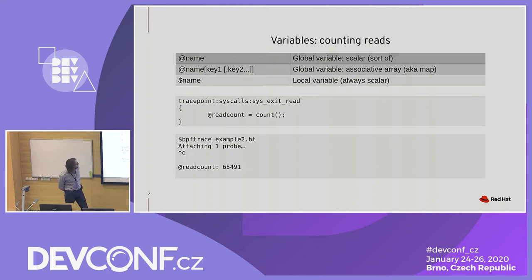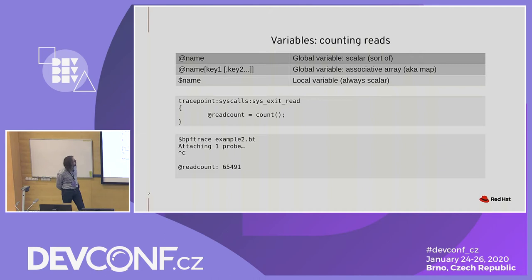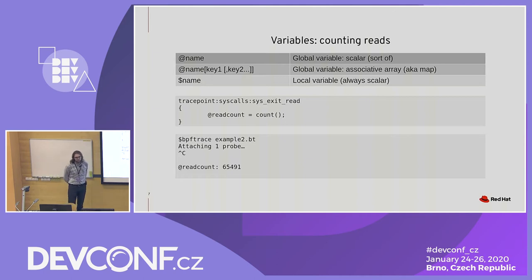Here's an example with just one variable, read_count. It's a scalar. What we put in there is the result of the count() function — that's a built-in function in BPF trace, and it just returns the number of times it has been called. So at the end, read_count will contain how many times the read syscall has been called. When you look at the output, you can see it prints that variable. I didn't do anything — BPF trace always prints all the global variables at the end, so you don't have to worry about that.